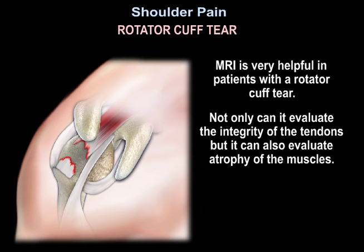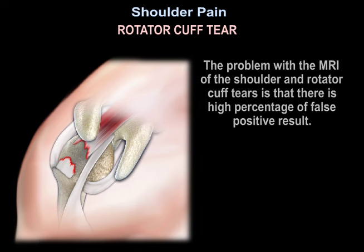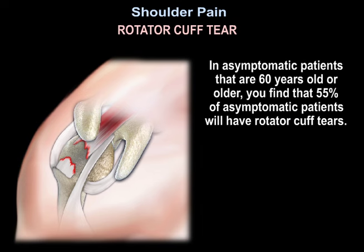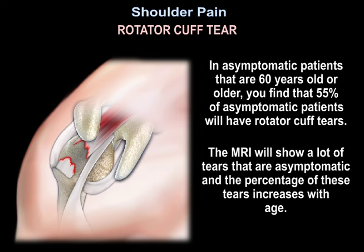MRI is very helpful in patients with rotator cuff tears. Not only can it evaluate the integrity of the tendons, but it can also evaluate atrophy of the muscles. However, there is a high percentage of false positive results. In asymptomatic patients 60 years old or older, 55% will have rotator cuff tears on MRI. So the MRI will show a lot of tears that are asymptomatic, and the percentage of these tears increases with age.